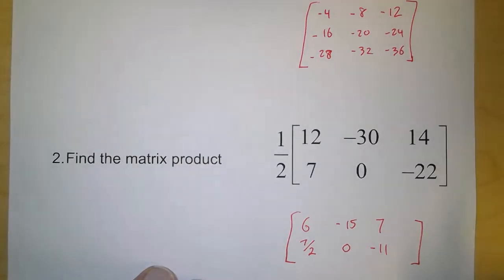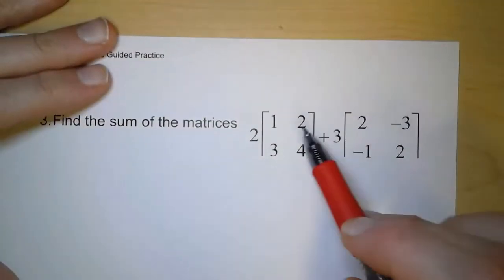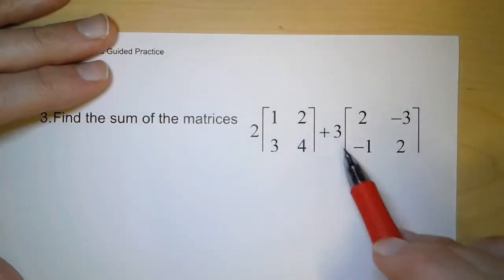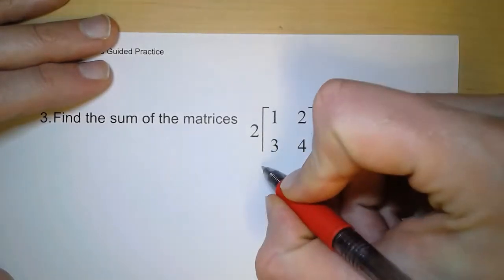And so with scalar multiplication, whatever's out front, you just multiply in. So on the next page, here we have these two matrices, but each of them have a different scalar. Now, in order to add them, we have to first multiply the scalars in.